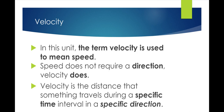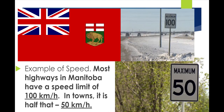In this unit, the term velocity is used to mean speed, but there is a difference. Speed does not require a direction; velocity does. Velocity is the distance something travels during a specific time interval in a specific direction. An example of speed: most highways in Manitoba have a speed limit of 100 kilometers per hour; in town it's 50 kilometers per hour — no direction required.